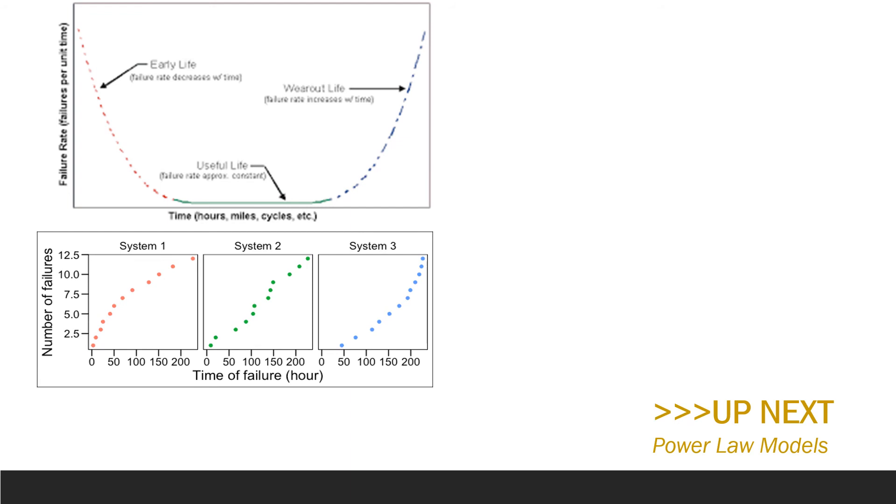So just like we ended the HPP module, I'll end the NHPP module by looking at our bathtub curve in these three hypothetical systems. Recall that system 2 has a constant rate of failure which we used as an example of the HPP case. When we look at systems 1 and 3, the cumulative number of failures is on the y-axis and the time is on the x-axis. Now when we look at system 1, we see that the time between failures is increasing, especially around this area here.